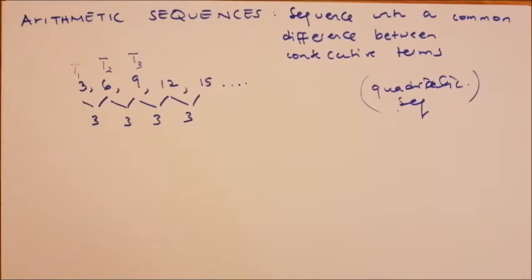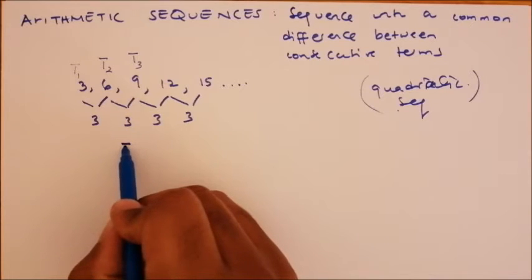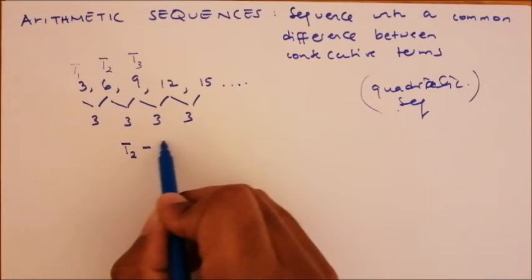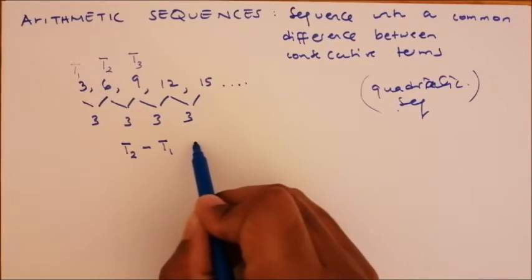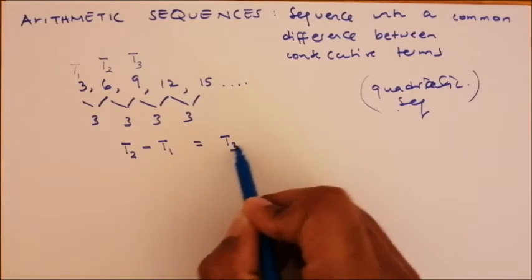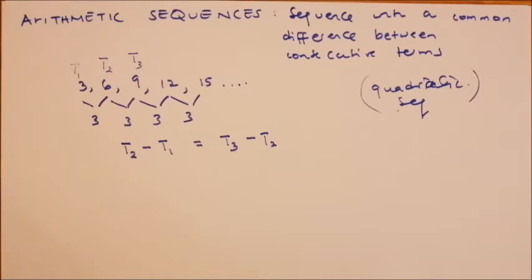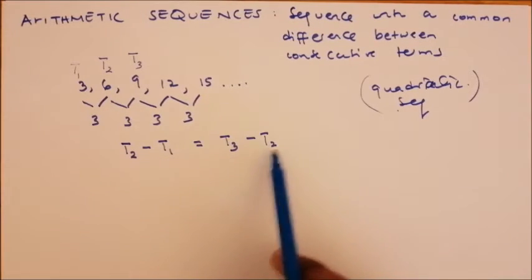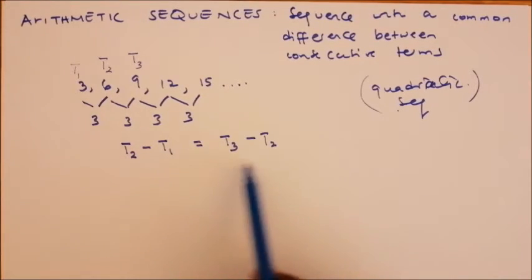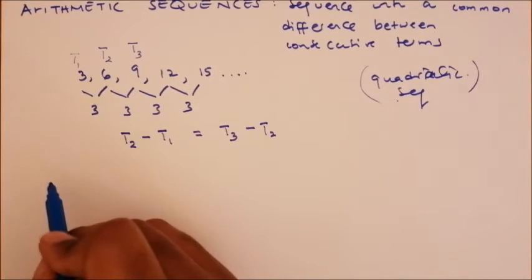To show whether a sequence is arithmetic, check whether term 2 minus term 1 equals term 3 minus term 2. If these differences are not equal, then it is not an arithmetic sequence.